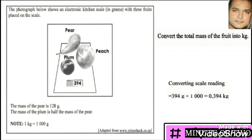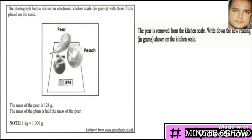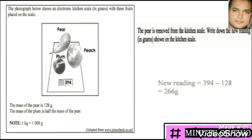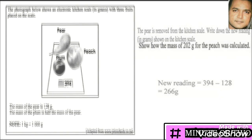These exam paper videos are to strengthen the grounding that you already have in maths. The next part asks: if the pear is removed from the kitchen scale, write down the new reading in grams. We know the total amount of all the fruit is 394, so we just subtract the 128 grams for the pear and we arrive at 266 grams.